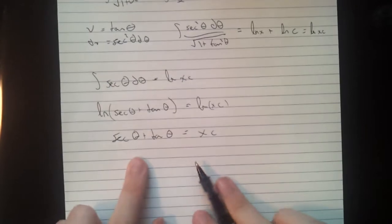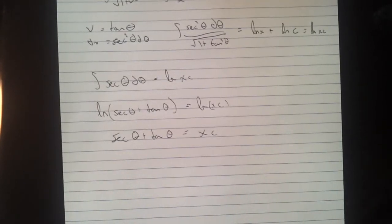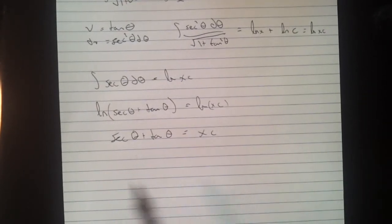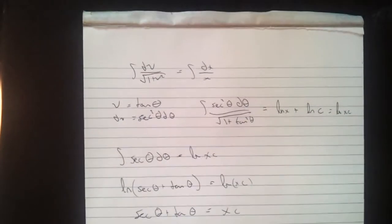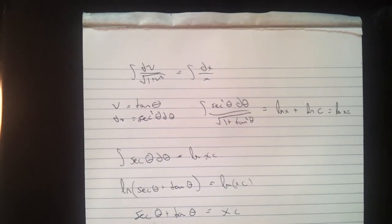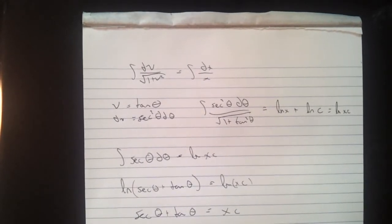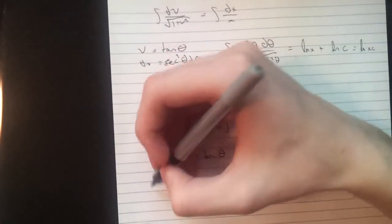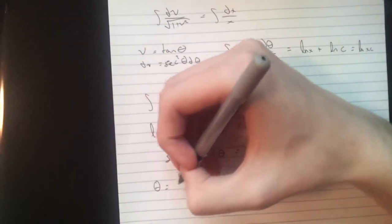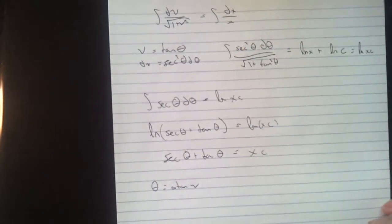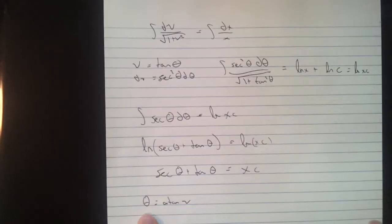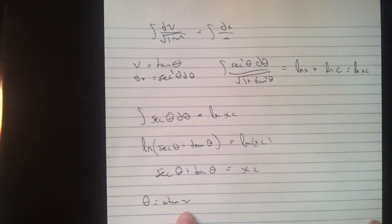So we go back up here, our theta. The tan theta is easy, that's just v. Secant theta, that's a little more difficult. So I'll just write it out here. Theta equals the arctan of v. So we're left with the secant of the arctan of v. And you've probably already seen this, I'll show you anyways.